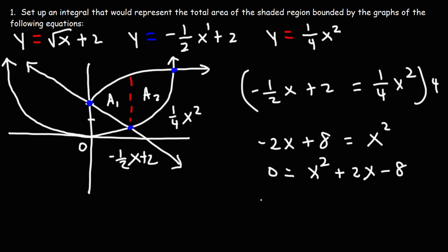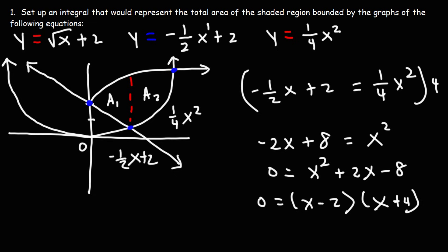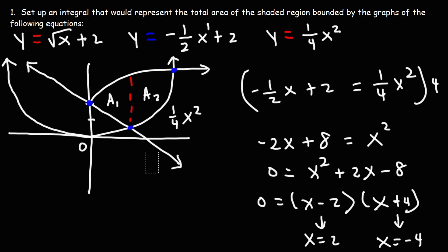Moving everything to one side gives us x squared plus two x minus eight equals zero. We can factor this trinomial — two numbers that multiply to negative eight and add to two are positive four and negative two. So it factors to (x minus 2)(x plus 4). Using the zero product property: x equals two or x equals negative four. We don't need x equals negative four; x equals two is the intersection point we need. Note this graph is not drawn to scale.